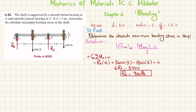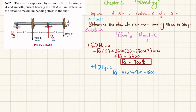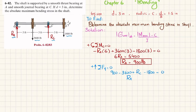Now we find R_C using the second equation of equilibrium: the sum of all forces in the y-direction equals zero, with upward forces taken as positive. So R_A + R_C − 3600 − 1800 = 0. Substituting R_A = 900: 900 + R_C − 3600 − 1800 = 0, giving R_C = 4500 pounds.